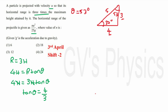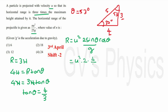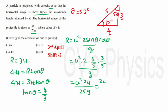They are asking for the range, so we take the range formula: R = u²·sin2θ/g = u²·2sinθcosθ/g. We know θ = 53°, so we substitute: R = u²·2·(4/5)·(3/5)/g. Calculating: 2 × 4 = 8, and 8 × 3 = 24, giving 24/25. So R = 24u²/25g. They asked in the form nu²/25g, so n = 24. Option 4 is the right answer.